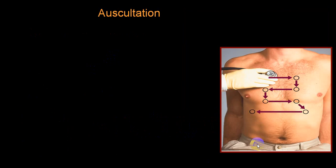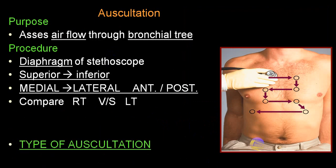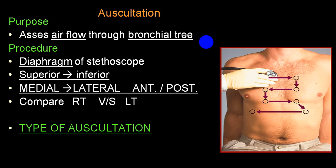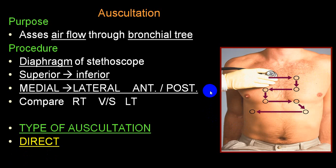There are two types of auscultation: direct and indirect. As far as the respiratory system is concerned, we are auscultating the sounds produced over the chest due to inspiration and expiration, as air moves into the bronchial tree and produces different sounds. During auscultation we mainly use the diaphragm part of the stethoscope, and we auscultate from above downwards, from lateral to medial, always comparing right with left.